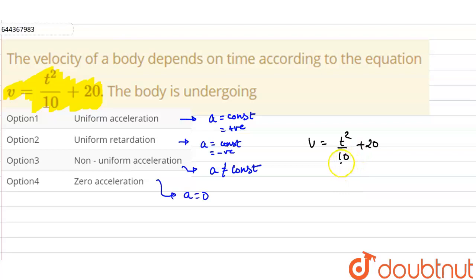On differentiating the velocity, we will get our acceleration. So, acceleration will be rate of change of velocity. So, this will be equals to d upon dt into t square upon 10 plus 20.